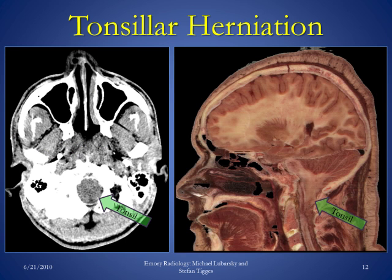This is another example of tonsillar herniation. On the image on the left, we don't see any cerebrospinal fluid — just the spinal cord and cerebellar tonsils filling the entire space. On the sagittal image, we see the same thing: marked compression of the spinal cord by the cerebellar tonsils.